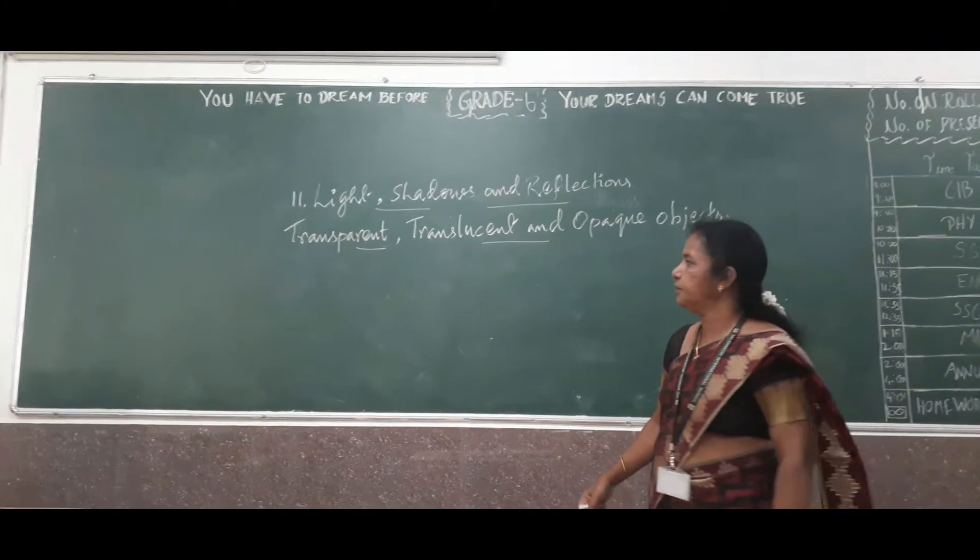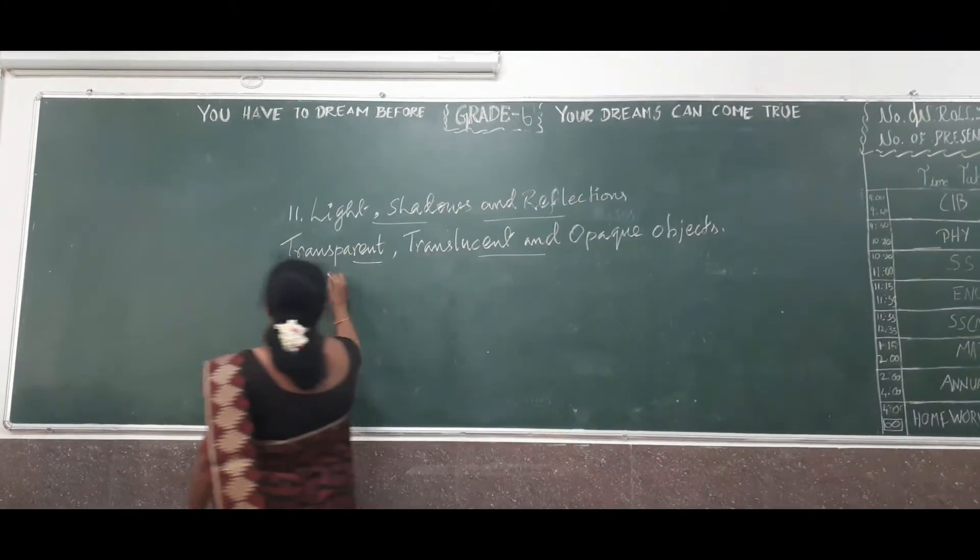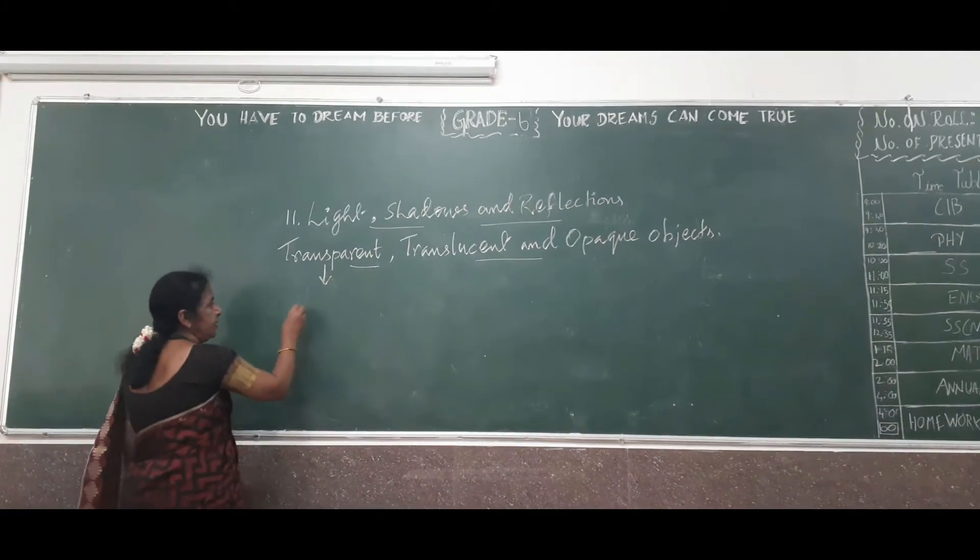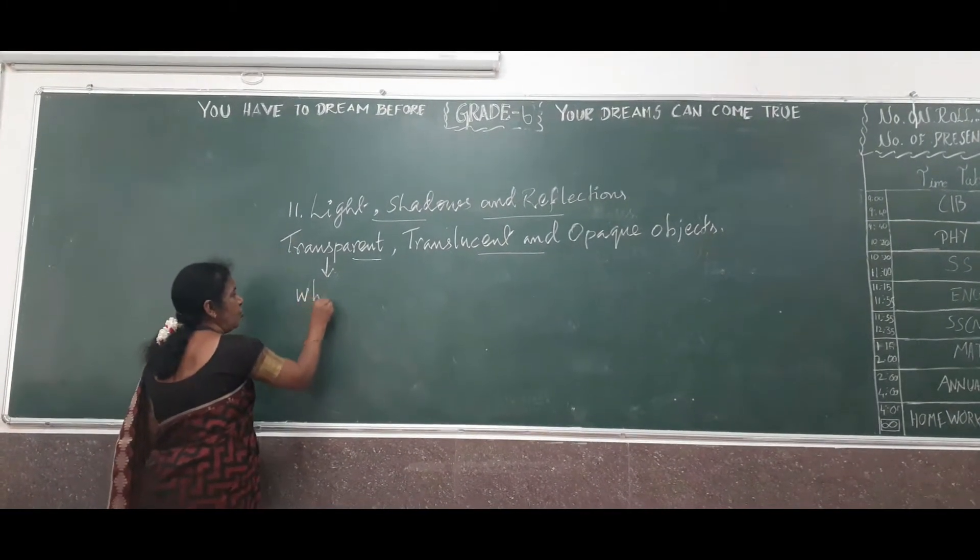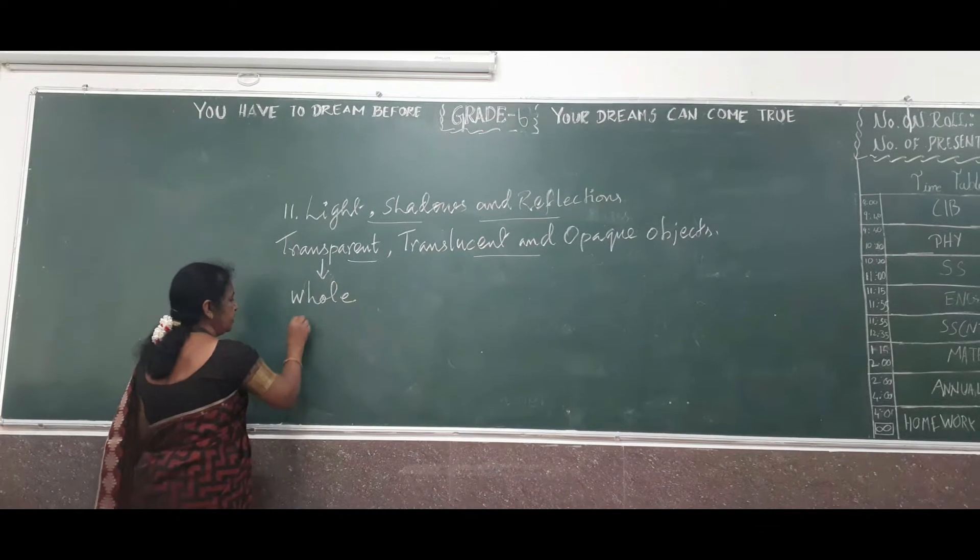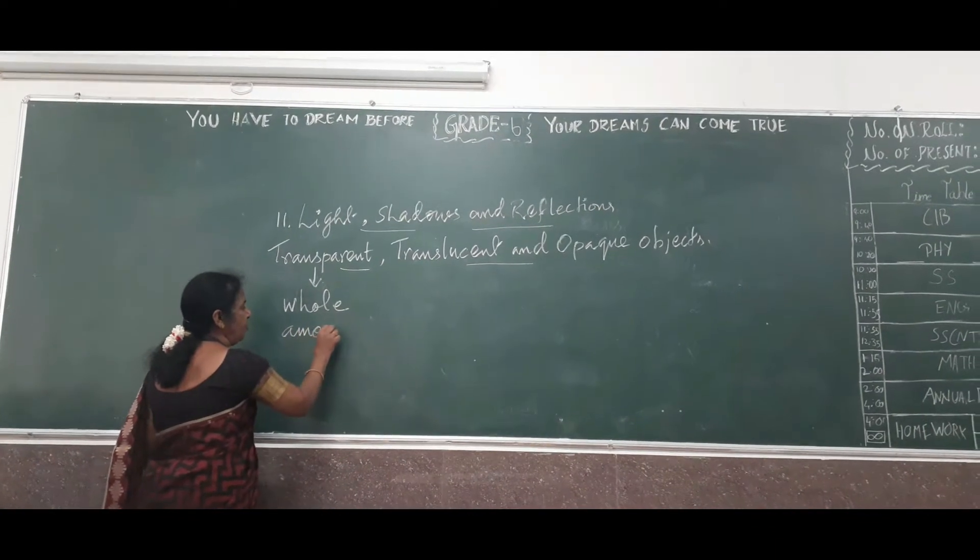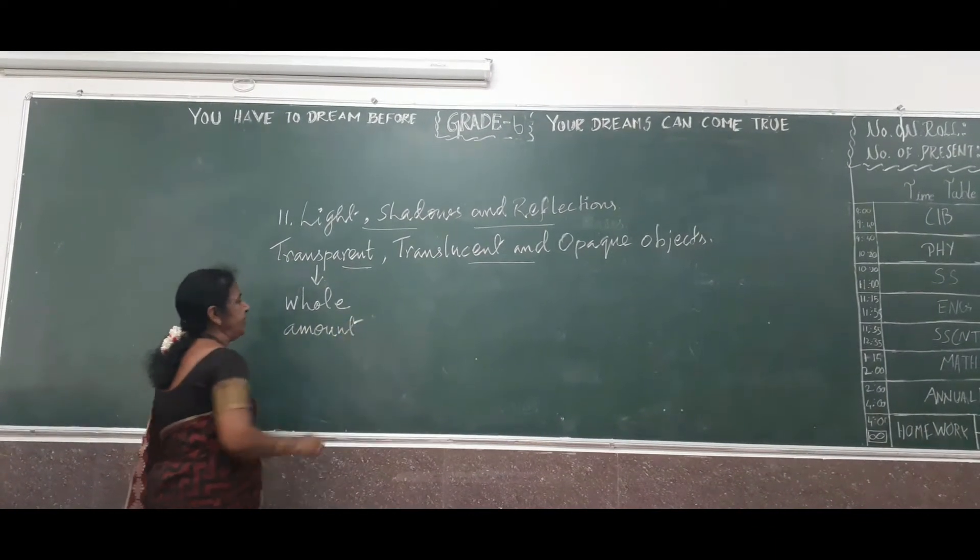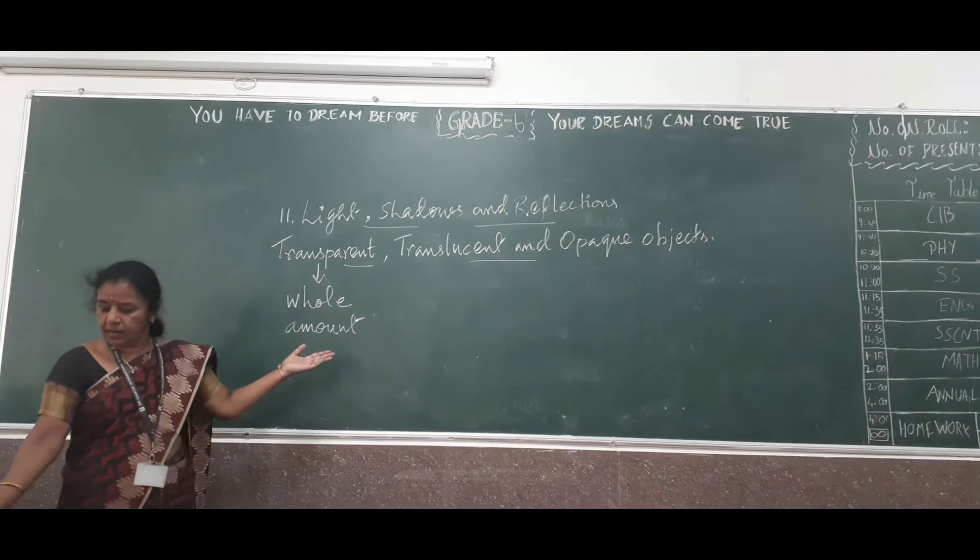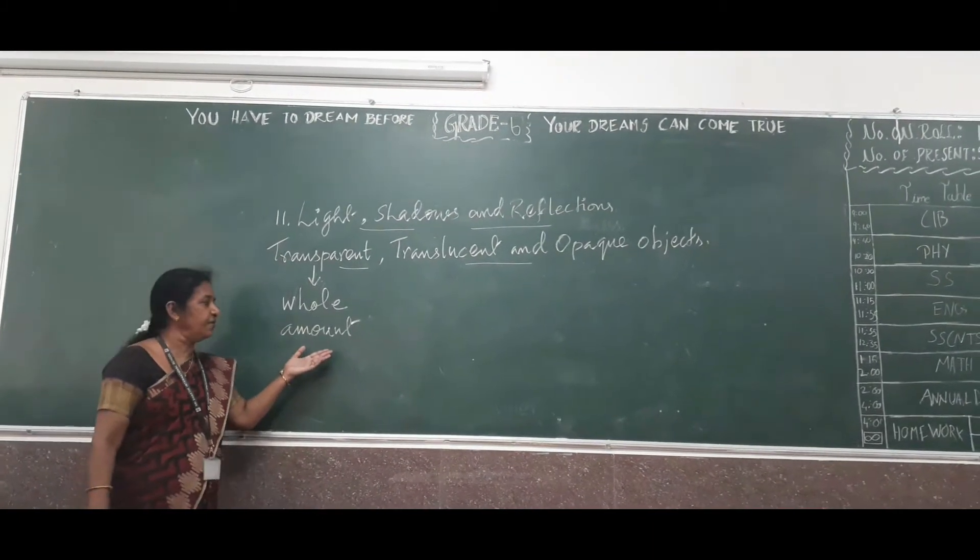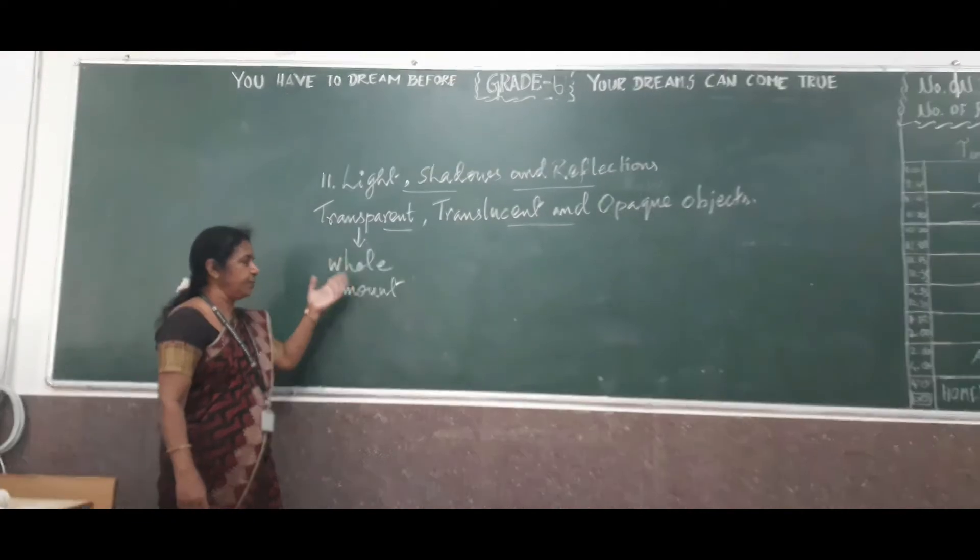In this basis, what is meant by transparent? Transparent is nothing but the objects which allow whole amount of light. What is meant by whole amount of light? That is, it is not stopping the light. It will allow the whole amount of light. It is known as transparent.